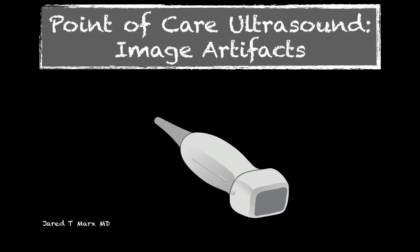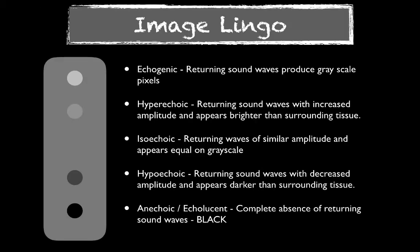In this lecture we're going to be discussing imaging artifacts. Essentially, these are artifacts that the machine misinterprets and creates on the image. They are not structures that exist within the body, but the machine, for various reasons, misinterprets and displays them on your ultrasound image.